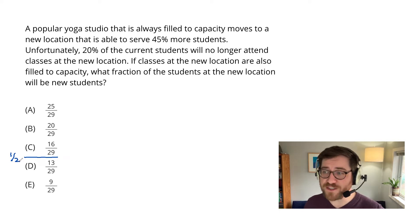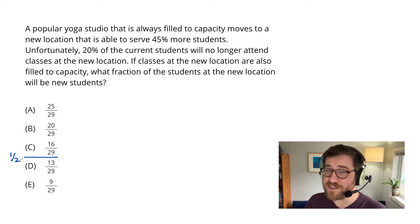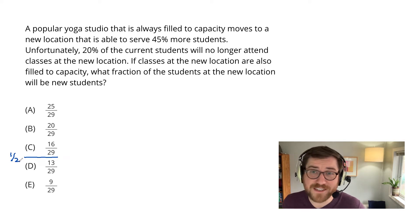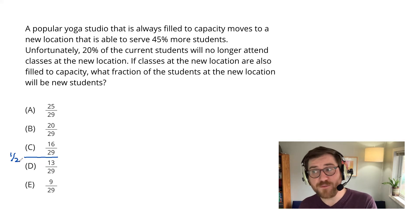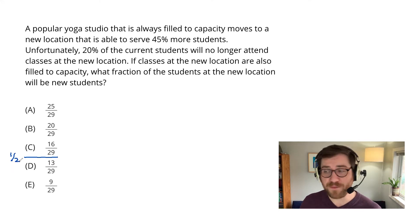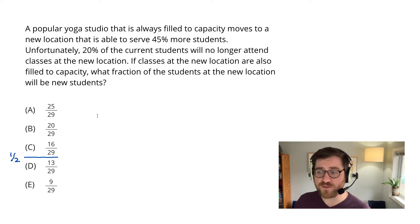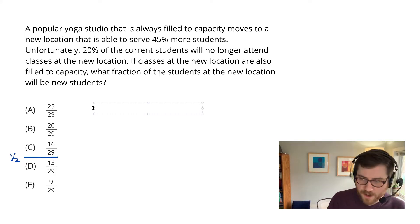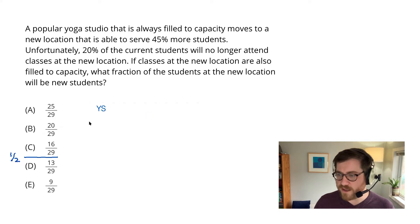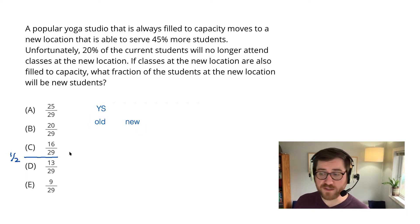A popular yoga studio — I love the details on these things; they want you to know this place is popular, that's why it's filled to capacity. In fact, they're going to need to move to a new studio. This is when I pick up my pen, because I know I'm going to get things mixed up between the two studios if I don't create some sort of chart to track this. So what have I got? A couple different yoga studios — YS — I've got an old one and I've got a new one, just making a little table here with these column headers.